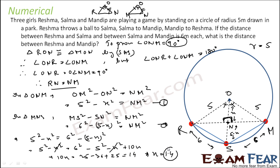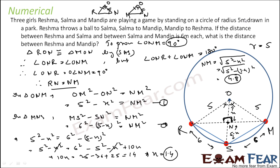Once we have x, we find NM as the root of 5² minus 1.4², which equals 4.8 meters. So RM equals twice NM, that is 2 times 4.8 meters, which equals 9.6 meters. That is the answer.